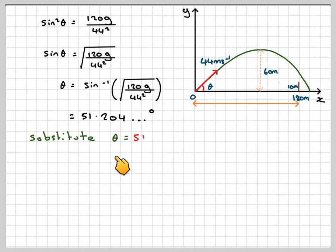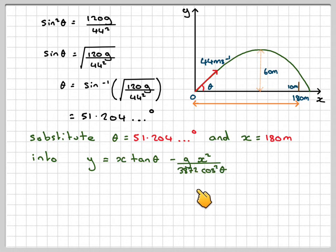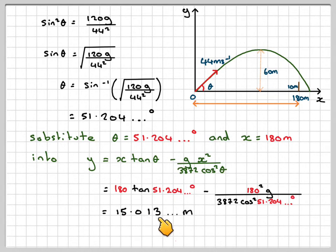So if we now substitute that, we have to put x equal to 180 into y equals x tan theta minus g x squared over 3872 cos squared theta. We're going to get 180 tan 51.204 degrees minus 180 squared times g over 3872 cos squared of 51.204 degrees. That will give 15.013, so that's obviously higher than 10, therefore it does not hit.